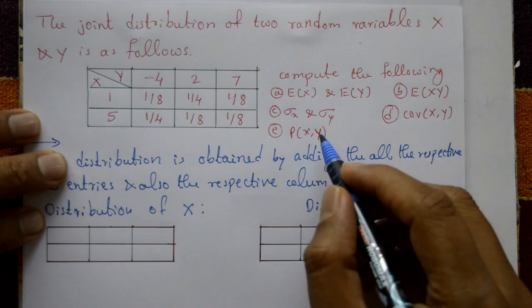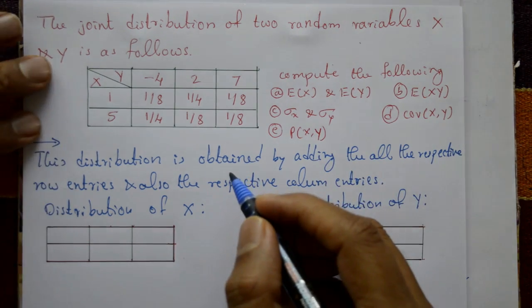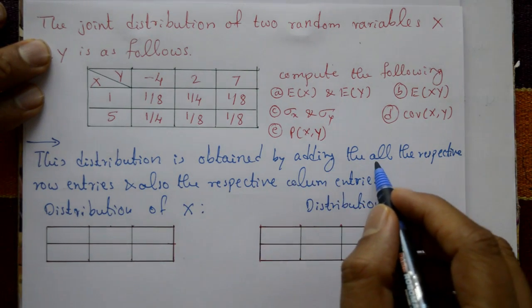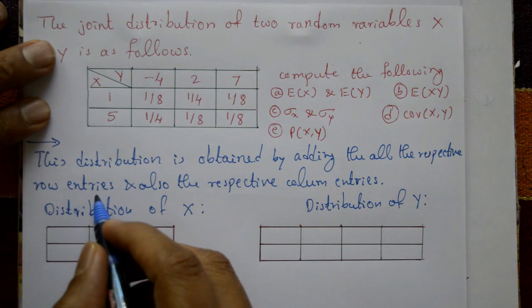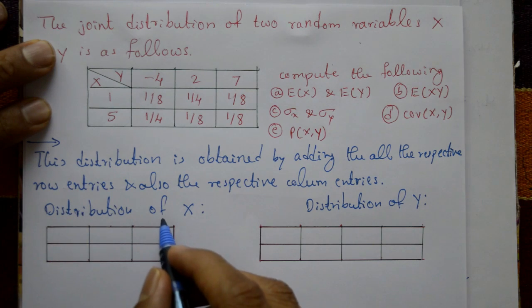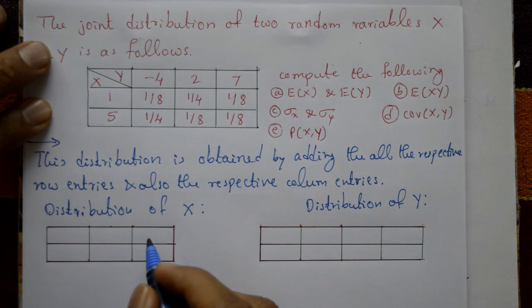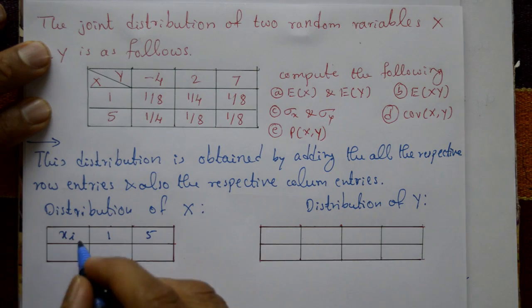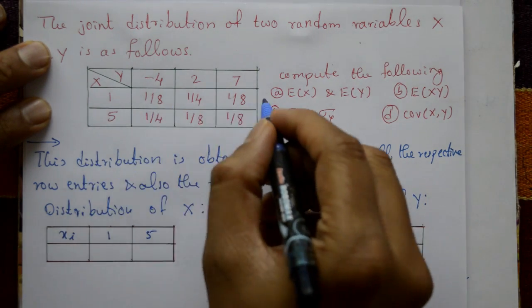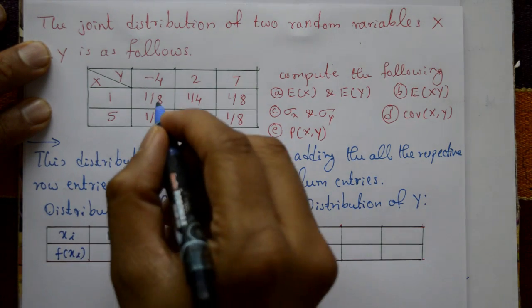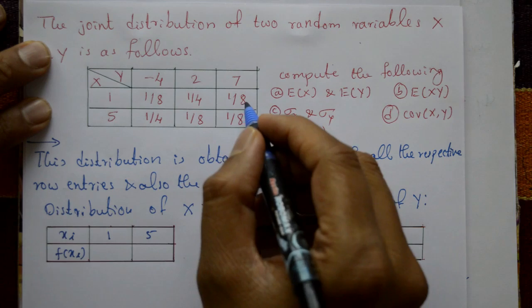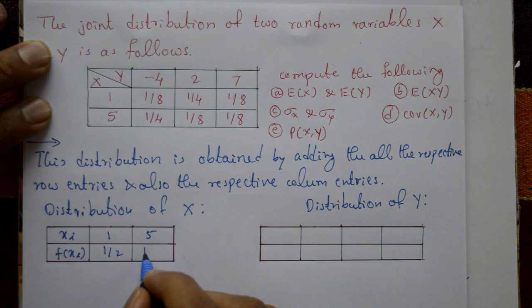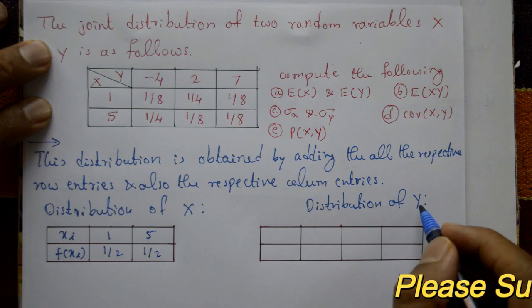The marginal distribution is obtained by summing all entries row-wise and column-wise. For the distribution of X, summing row-wise: x₁=1 gives 1/8 + 1/4 + 1/8 = 1/2, and x₂=5 gives 1/4 + 1/8 + 1/8 = 1/2. So f(x): X takes values 1 and 5, each with probability 1/2.